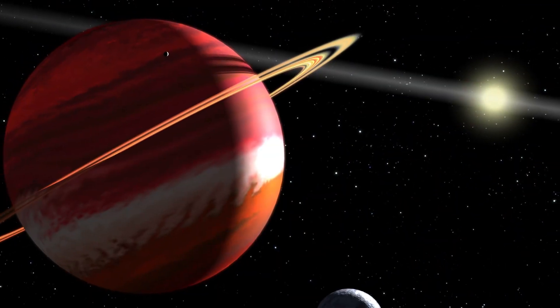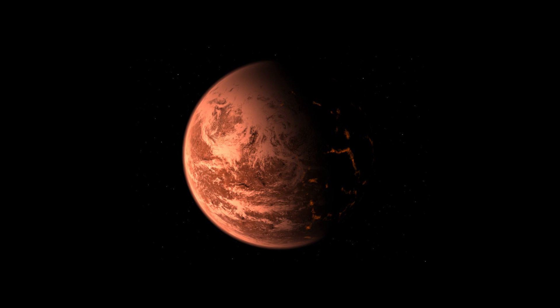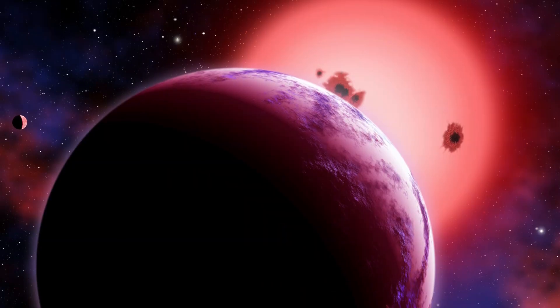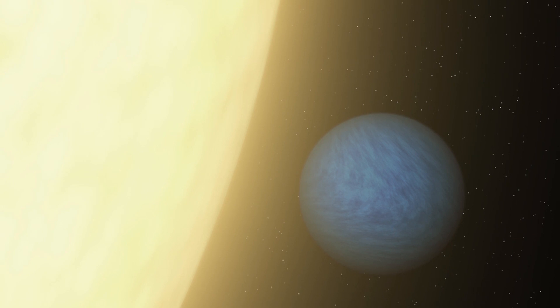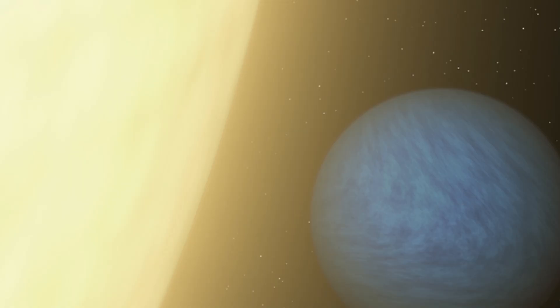There's Epsilon Eridani B and Gliese 876 D. There's GJ1214B, that's a water world with oceans. 55 Cancri E—mostly diamonds, nifty. Two suns, Kepler 16B, like a real-life Tatooine.